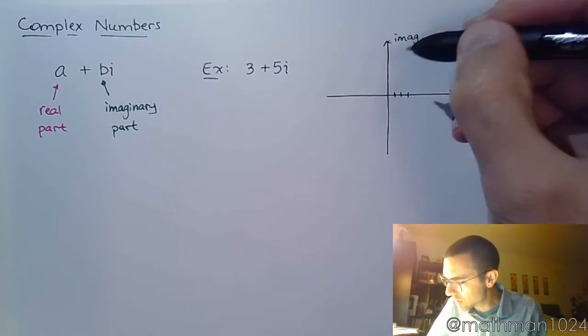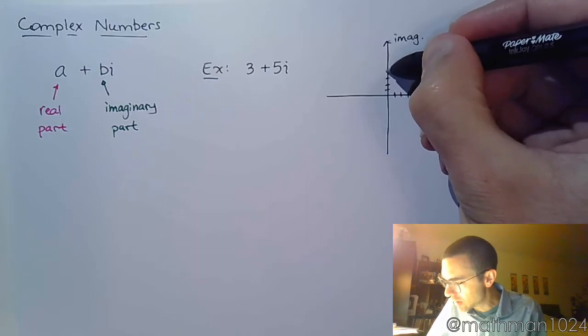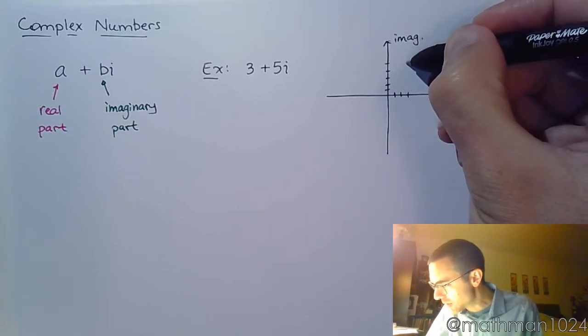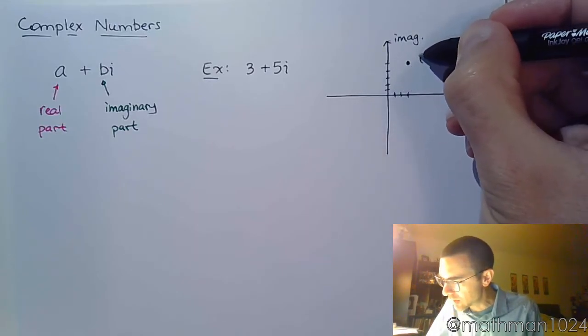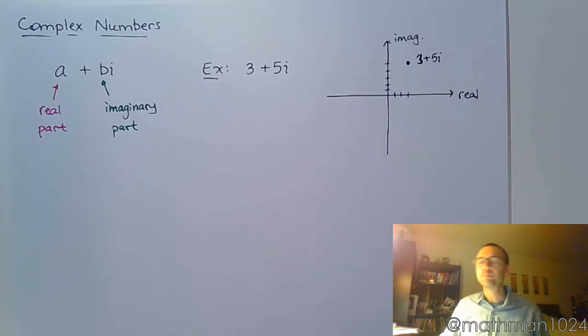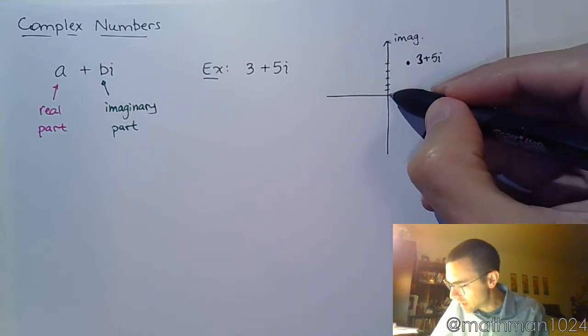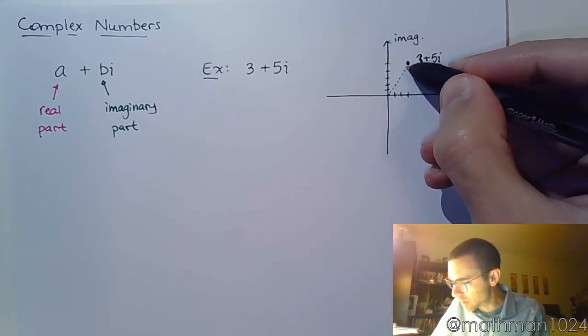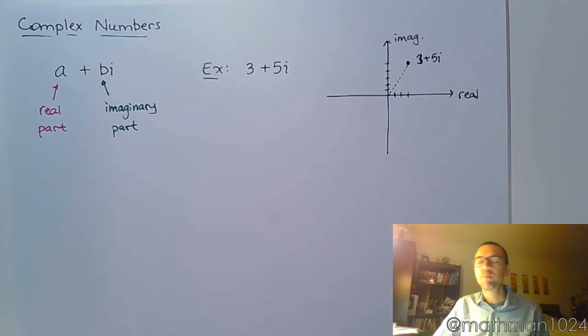Something like 3 plus 5i is going to be plotted 3 units in the real direction and 5 units in the imaginary direction. So this is the number 3 plus 5i. And with this number you can talk about how big is this number, which would just mean the distance from the origin to that.